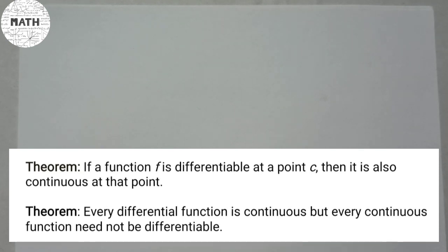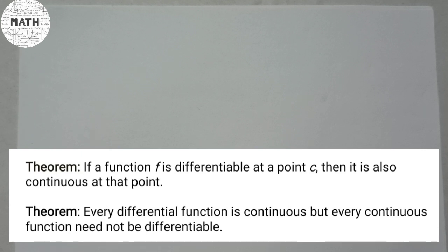The first theorem states: if a function f is differentiable at a point c, then it is also continuous at that point. The second theorem states: every differentiable function is continuous, but every continuous function need not be differentiable. These two theorems correlate to one another, so just go through them.